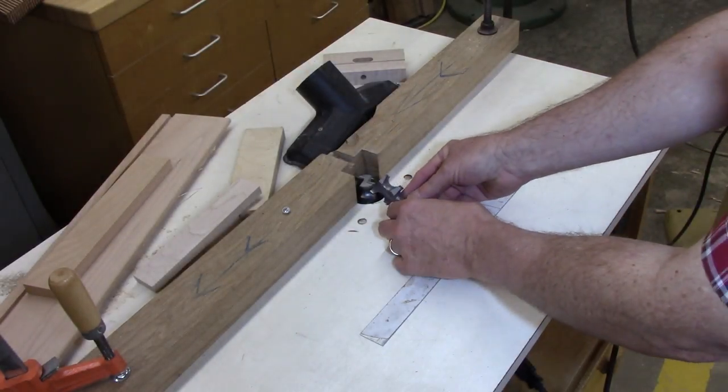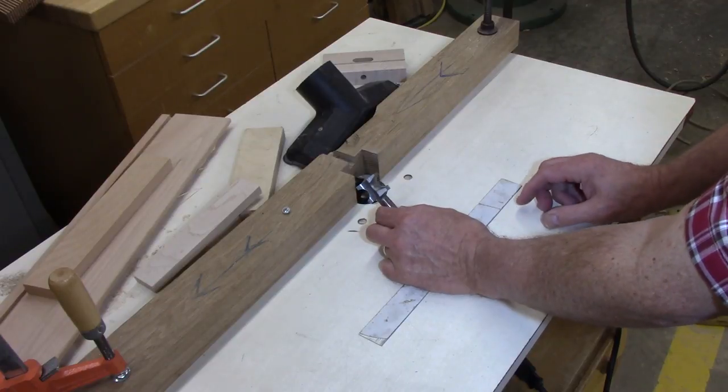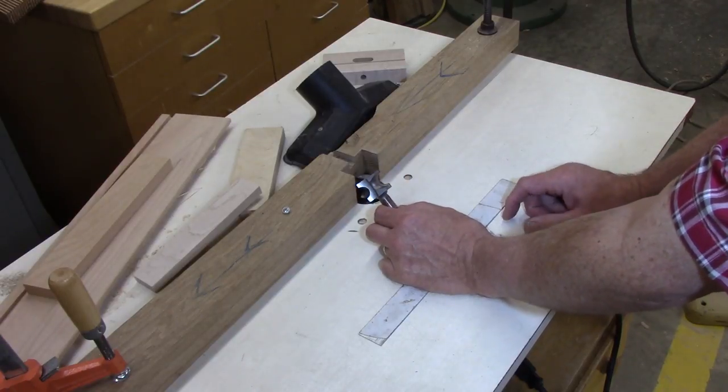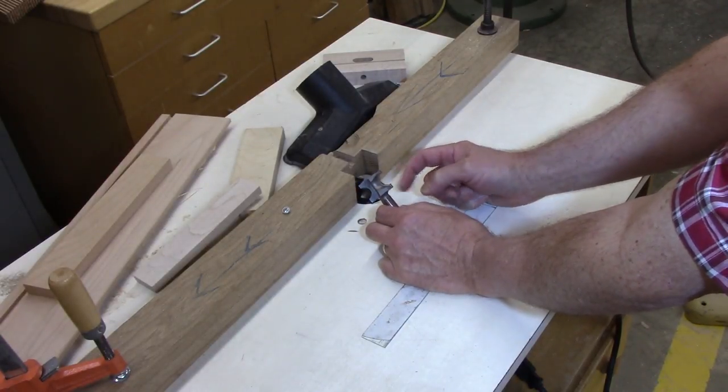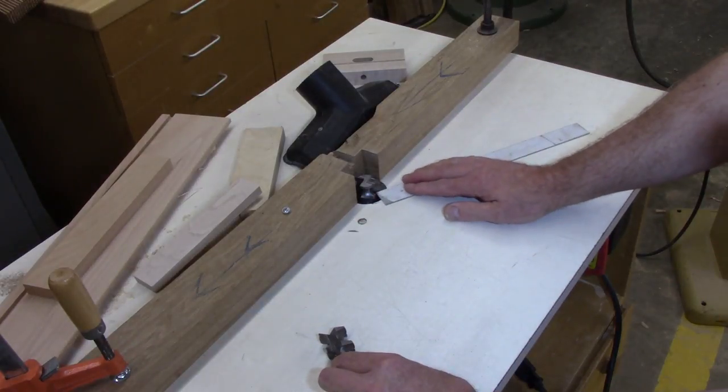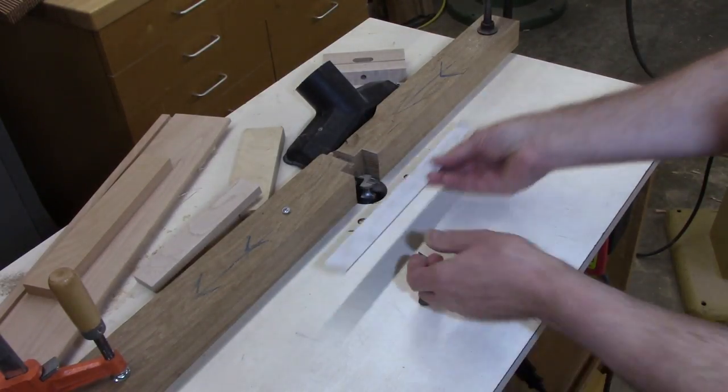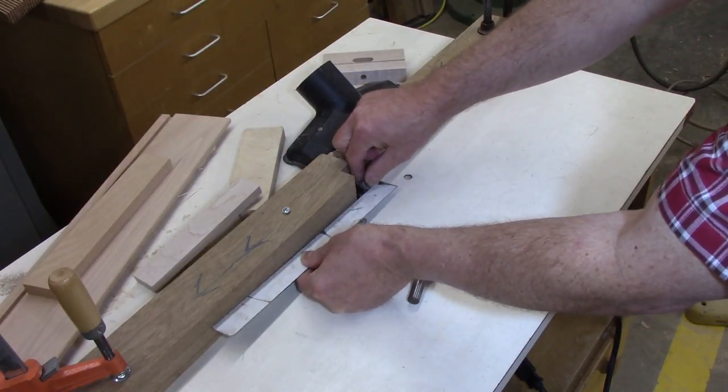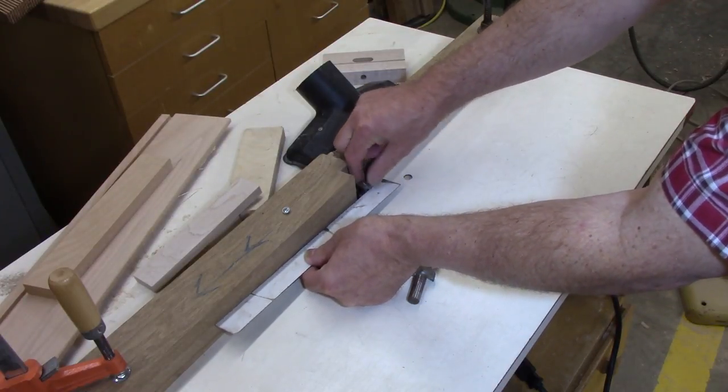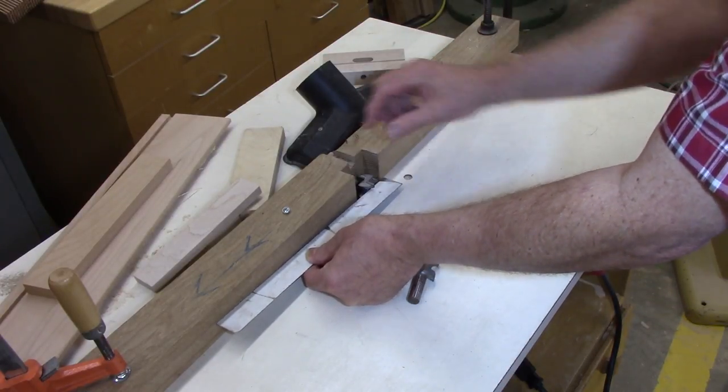We're using a bit very similar to this, a little bit smaller, and what's key is two things. This point here needs to be set flush with the table, and this point here needs to be set with the outfeed table to give it an ideal match.